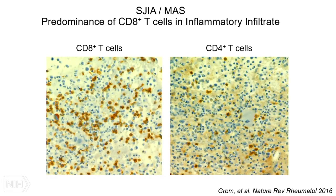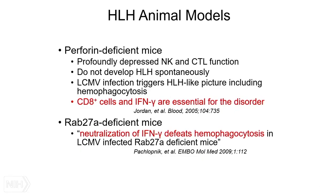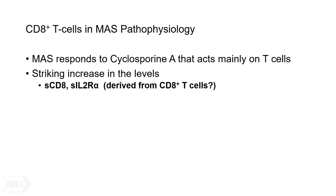Turning to T cells — as mentioned, they are very prominent in inflammatory lesions, predominantly CD8-positive cells. These CD8 cells have been shown to produce quite a bit of interferon gamma, and in several animal models of primary HLH and macrophage activation syndrome, these cells have been shown to play a pivotal role. If you either eliminate those cells or neutralize interferon gamma, the animals do not develop full-blown disease. We believe these observations are relevant to MAS as well. Patients with MAS typically respond to cyclosporine A, which acts mainly on T cells, and we often see a striking increase in soluble CD8 molecules and soluble IL-2 receptor alpha chains, presumably derived from cytotoxic CD8 cells.